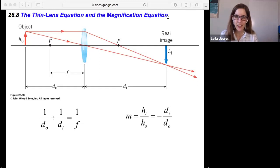Section 26.8, The Thin Lens Equation and Magnification Equation. This equation looks very familiar because we've seen it before. We have 1 over DO plus 1 over DI, 1 over the object distance plus 1 over the image distance equals 1 over F, 1 over the focal length. It's the exact same as what we saw with mirrors.